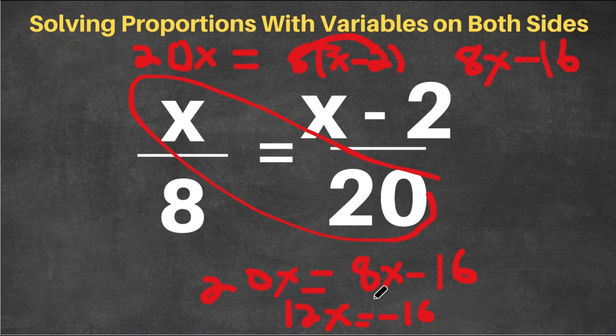And if we divide 12 on both sides, we get x equals negative 16 over 12, which can be simplified into negative 4 over 3. Sorry for the bad handwriting. And this is our answer. Negative 4 over 3. So that's our answer for this proportion.